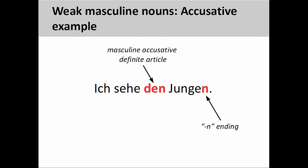However, in this sentence, ich sehe den Jungen — I see the boy — the nominative personal pronoun ich is the subject of the sentence, and den Jungen is its direct object in the accusative case. That is to say, the boy receives the action of being seen by the subject of the sentence. You will note that the masculine definite article den indicates the accusative case, and it is also important to note that the noun adds an -en ending as well.